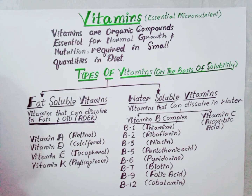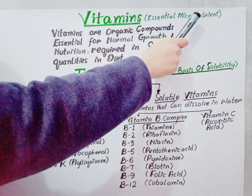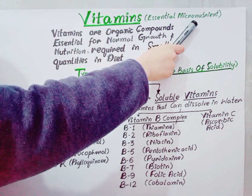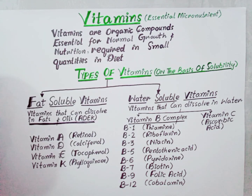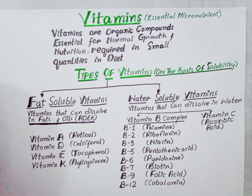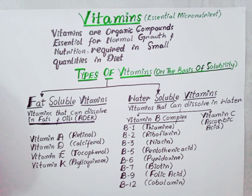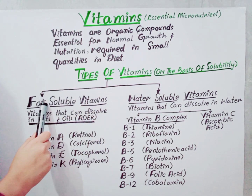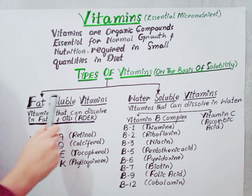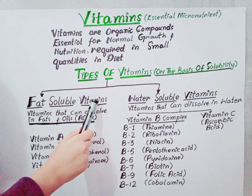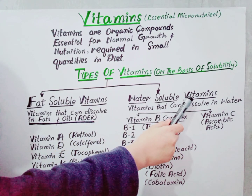As we all know, vitamins are essential micronutrients and they cannot be synthesized in an organism, so they must be obtained through diet. On the basis of solubility, vitamins can be divided into two types: fat-soluble vitamins and water-soluble vitamins.